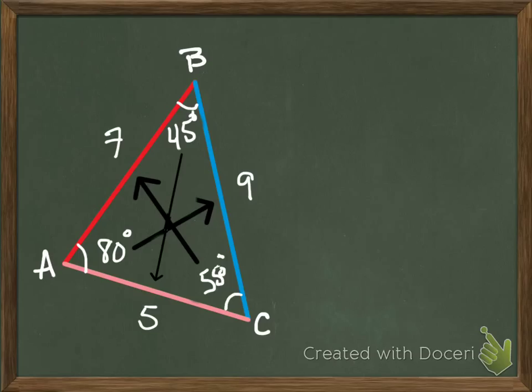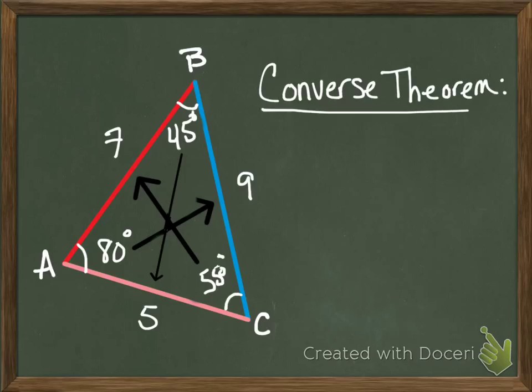Now what I want to talk with you about is the converse of that theorem. Remember, the converse is really just switching the back end of the sentence with the front end. So for this one, the converse says that in a triangle, the largest side is opposite the largest angle. I just wanted you to know these two theorems because they go with the previous video on the Triangle Inequality Theorem.